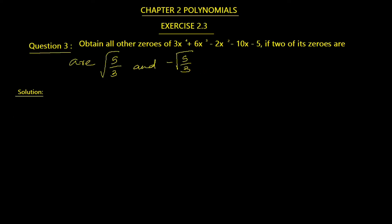Hi everyone, welcome back to our channel. We are going to do Class 10th Chapter 2 Polynomials, Exercise 2.3, Question 3: obtain all other zeros of 3x⁴ + 6x³ - 2x² - 10x - 5, if two of its zeros are √(5/3) and -√(5/3).